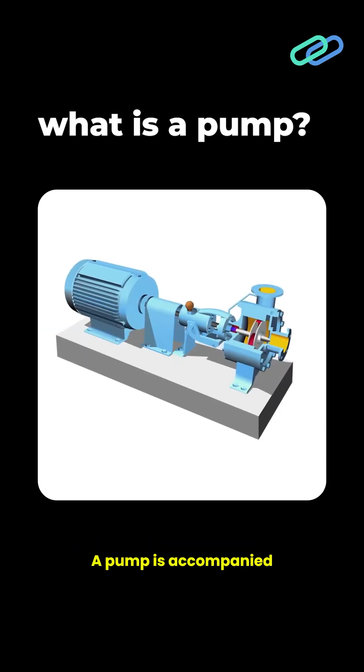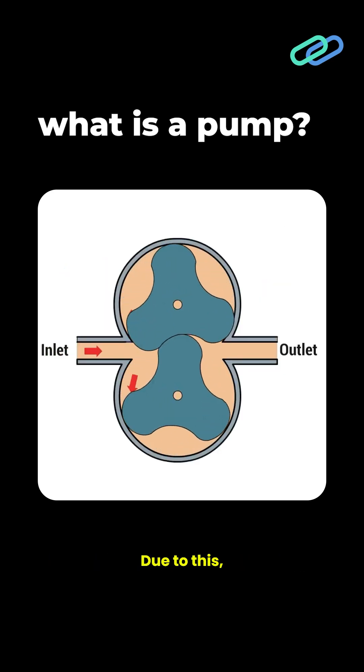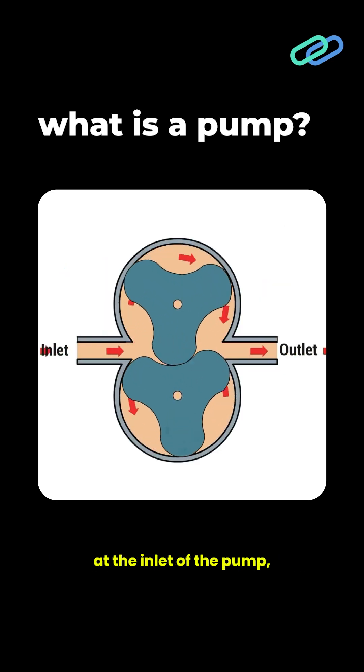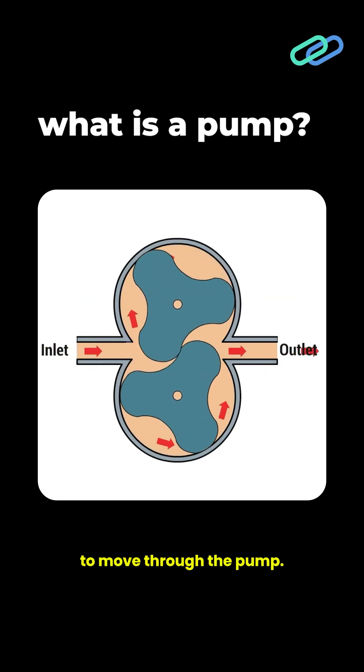A pump is accompanied by an electric motor that delivers the mechanical power to the pump. Due to this, a partial vacuum is created at the inlet of the pump which causes the hydraulic fluid to move through the pump.